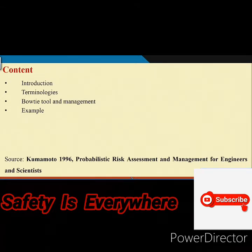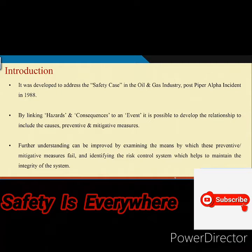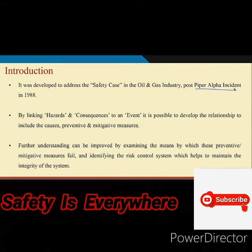To some extent it will be a revisit to fault tree and event tree, and in another way it is basically a holistic view for prevention through design. If we go back to the history, bow tie was developed to address the safety case in the oil and gas industry — specifically the Piper Alpha incident. After Piper Alpha, this bow tie concept became popular. What it does is it basically links the basic event failure to the top event in the fault tree and then links to the event tree.